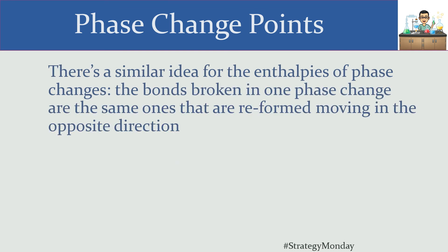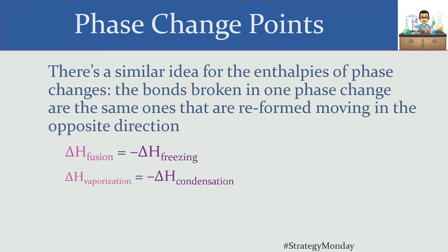A similar phenomenon happens with enthalpies of phase changes. When you measure how much energy is required to break down a mole of a substance, the bonds you break are the same ones you'll have to reform in the opposite phase change. When you melt something, you break bonds to take the solid into the liquid phase. Going from liquid back to solid, you reform those same bonds, releasing an equal magnitude of energy. So the delta H of fusion equals the negative delta H of freezing; delta H of vaporization equals negative delta H of condensation; and delta H of sublimation equals negative delta H of deposition.